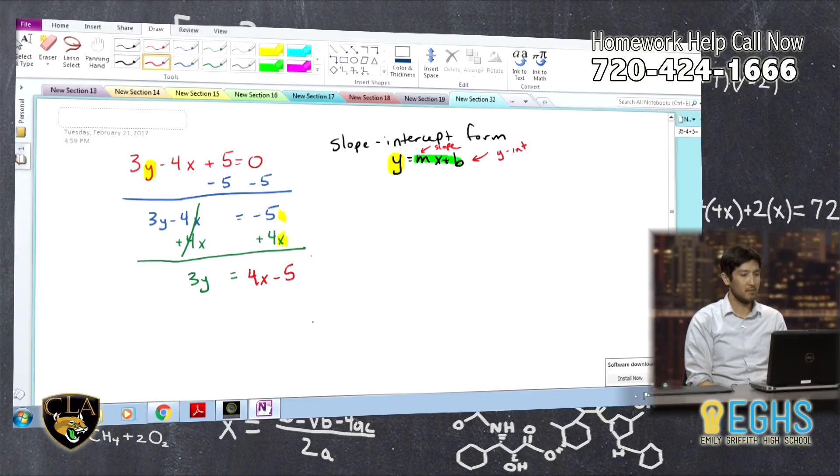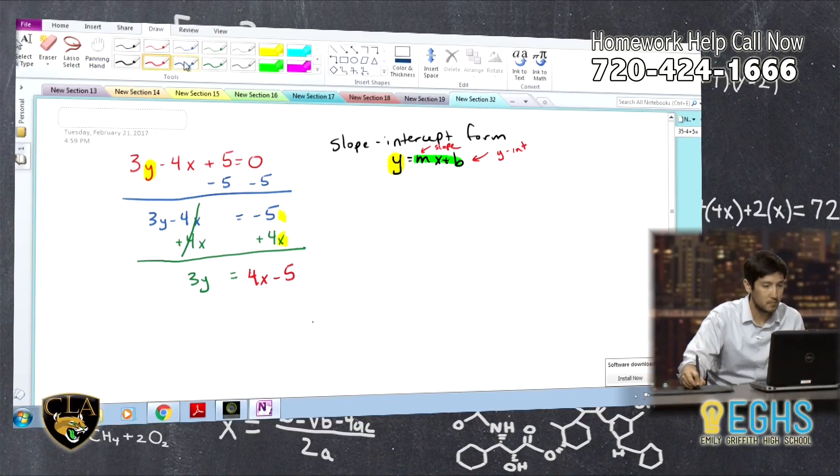Sometimes students ask if they can do negative 5 plus 4x, which is fine. But, why not just put it in the order you're going to put it in the end. Because we're trying to get it in slope-intercept form. You may notice that, with that mx plus b, you got your x term first. So, make it as close to that as you can. Yeah, it's just one less thing to do in the end.